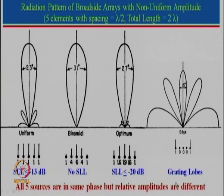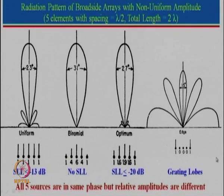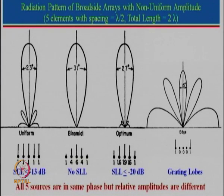Consider an interesting case from a grating lobe perspective: if only the two end elements are fed, the spacing between them is now equal to 2λ. For a broadside array, a grating lobe happens if spacing between two elements is λ, but here it is 2λ, so there are 2 grating lobes. This is generally not desired except for applications where you want maximum beam in multiple directions. In general we should never have a situation where spacing between elements for broadside exceeds λ, otherwise it gives rise to multiple lobes and directivity is much less.